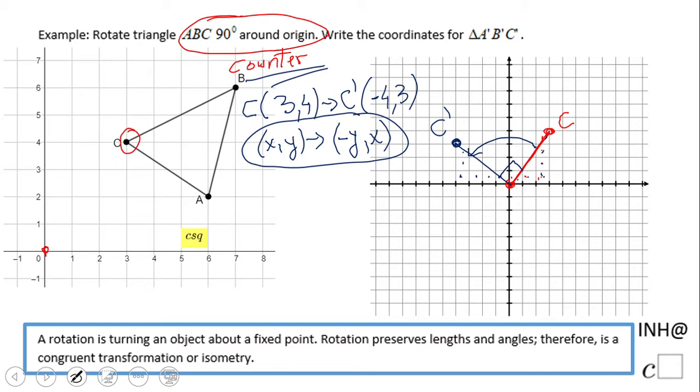Now we can do point A. A, which is at (6, 2), becomes A prime at (-2, 6). The Y goes first and we switch its sign.